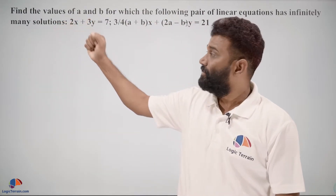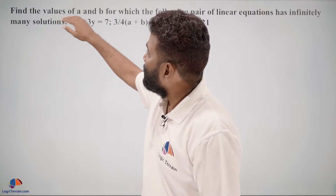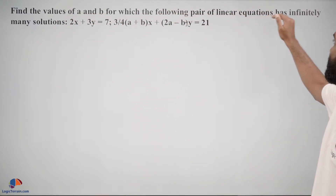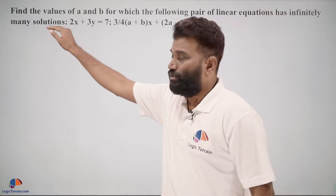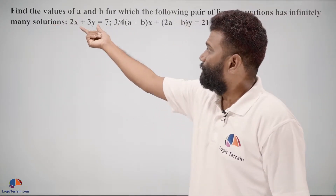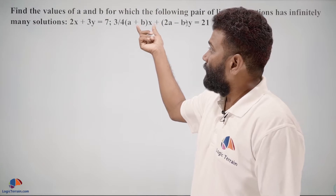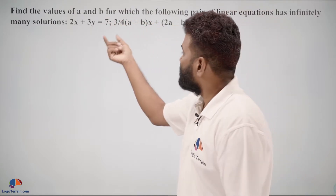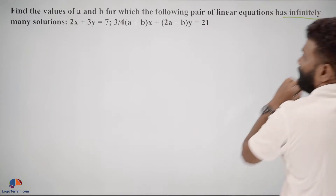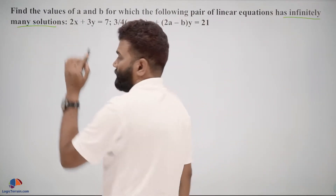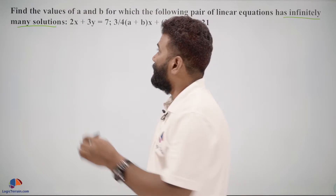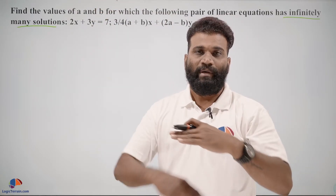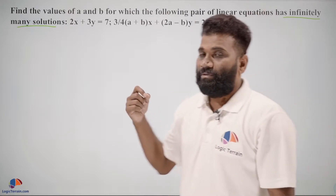Here is our question — very important: Find the values of A and B for which the following pair of linear equations has infinitely many solutions. We have the given pair of linear equations, and since they have infinitely many solutions, these two lines are coinciding each other.